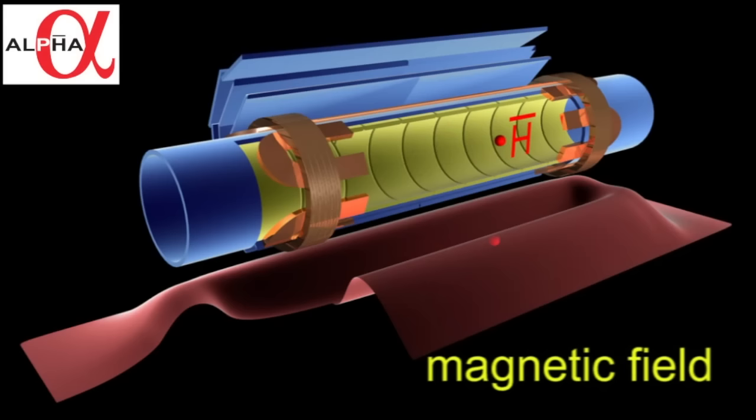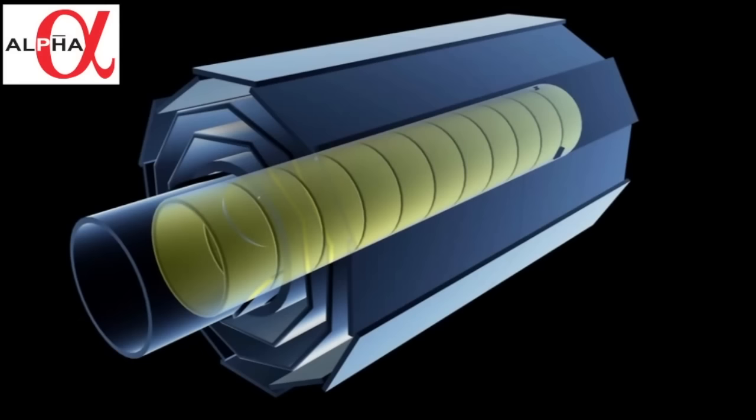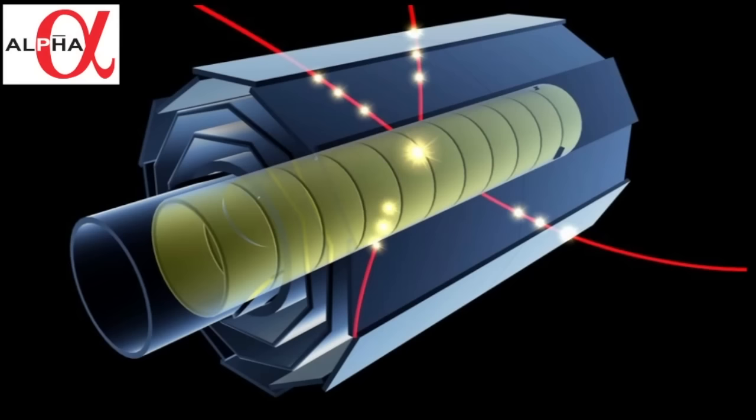We can detect the antihydrogen by releasing it from the trap, switching off the magnetic field. The antihydrogen collides with the wall and annihilates, and here we see how the tracks of the pions coming out of this annihilation are detected by the three-layer detector and reconstructed.